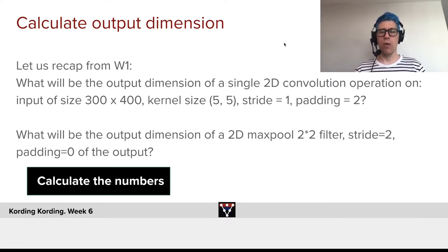And once we're there, what will be the output dimension of a subsequent 2D max pool with a 2 by 2 filter, a stride of 2, and no padding? And what will be the dimensions of these two? Your turn to calculate.